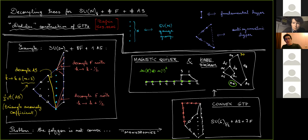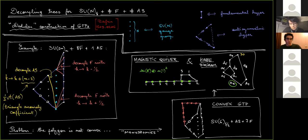To summarize: to characterize the Higgs branch, it is enough to know the magnetic quiver, because it gives you the dimension, global symmetry, and through the algorithm of quiver subtraction, you can get the Hasse diagram — the full singularity structure, and the complete set of Higgsings possible. These magnetic quivers can be obtained if you know the starting polygon. In recent work with Sakura, Marike, and Julius, we focused on theories with gauge group SU(N), with certain numbers of fundamentals and antisymmetrics.